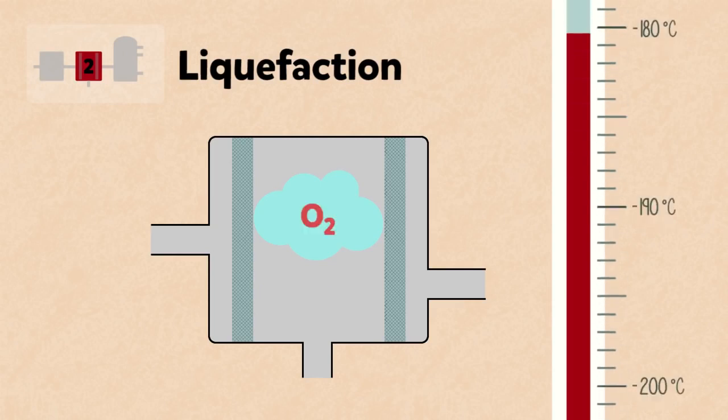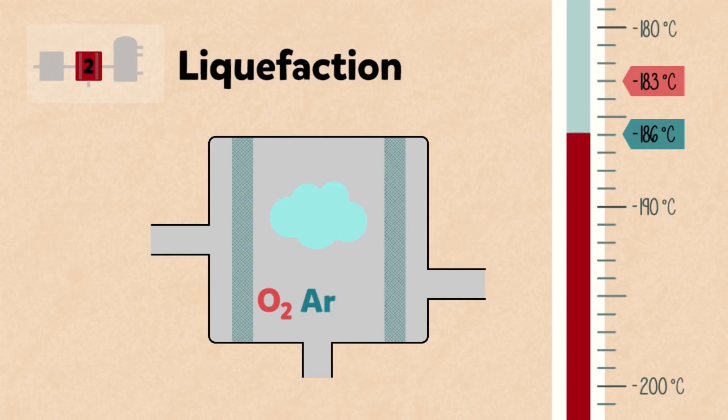The oxygen liquefies at minus 183 degrees Celsius, argon at minus 186 degrees Celsius, and nitrogen liquefies at minus 196 degrees Celsius.